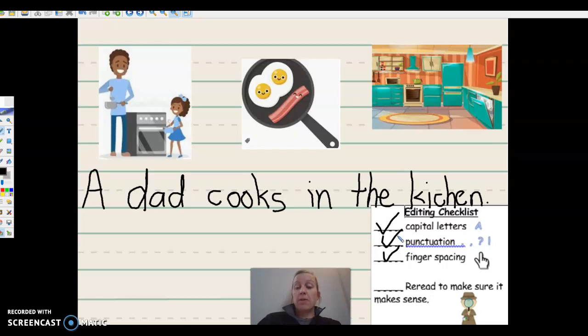The last thing is to reread it to make sure it makes sense. A dad cooks in the kitchen. I have every word I need. Check your sentence to make sure you do too. Now, I know you love to color, so grab your crayon and draw me a beautiful picture of either the first one of a boy reading in his room or of a dad cooking in the kitchen. I can't wait to see them. Have your family take a picture and send it to me on Class Dojo.